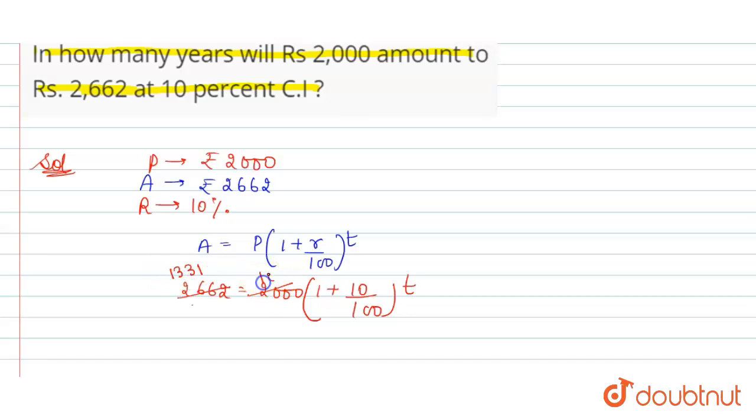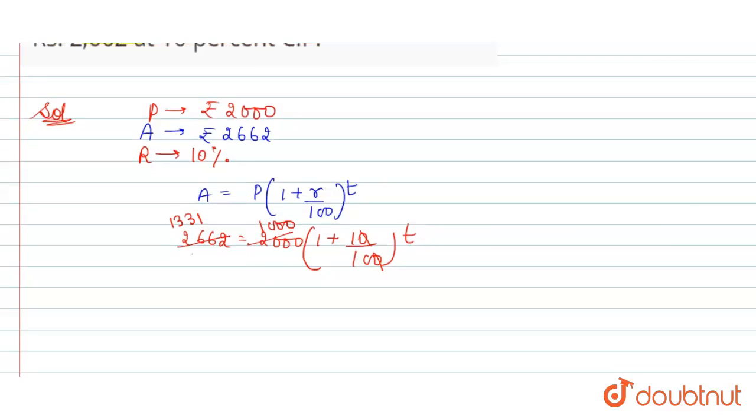1331 divided by 1000 equals, when we take LCM of 10, so 10 plus 1 equals 11 by 10 raised to power t.